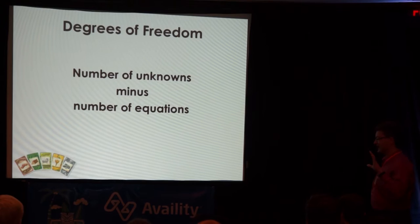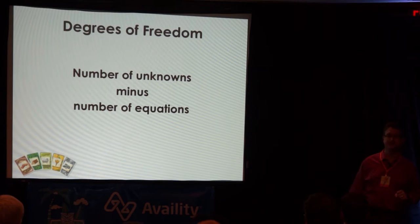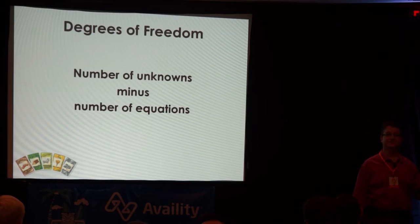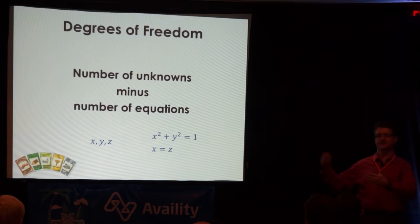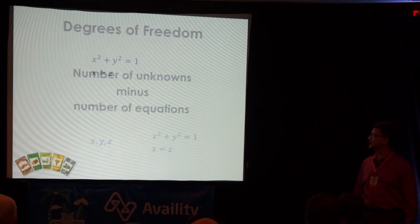We can compute the degrees of freedom by taking the number of unknowns and subtracting the number of equations. In the system we just looked at, we had three unknowns — x, y, and z — and we had two equations. So the number of degrees of freedom is one. Three unknowns minus two equations: three minus two equals one.